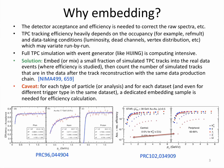There are also caveats: for each type of particle under study, for each analysis, for each data set, and even for different trigger types in the same data set, we probably need a dedicated embedding sample. Since STAR has a lot of analysis projects in different data sets, triggers, and particle species, we actually need a lot of embedding data to be produced for each analysis.